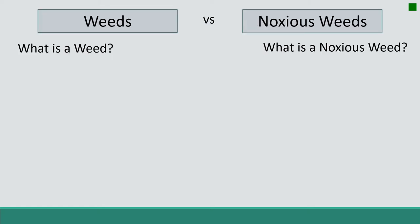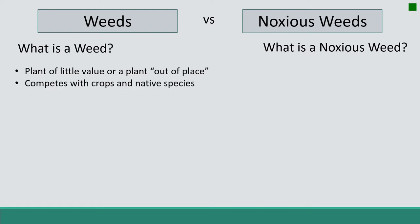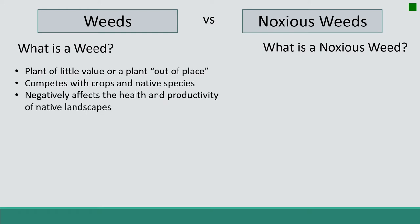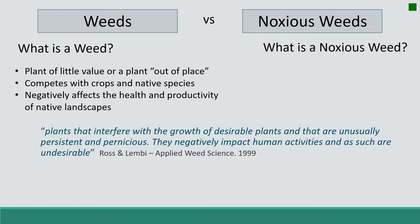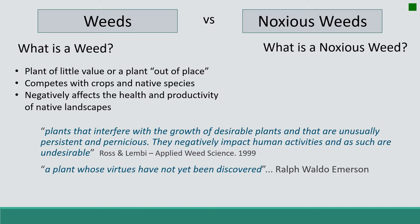In natural resources we often hear the terms weeds and noxious weeds, and we need to understand the difference. A weed is a plant of little value, or any plant that is out of place. It often competes with crops and native plants and can affect the health and productivity of native landscapes. One definition from Ralph Waldo Emerson that is particularly memorable: a weed is a plant whose virtues have not yet been discovered.